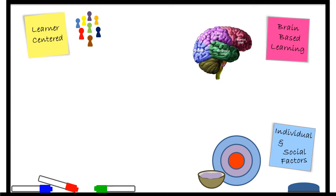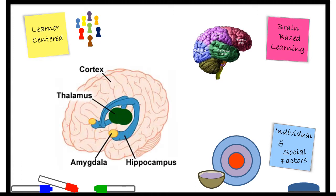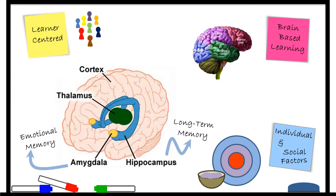Nestled in the middle of the brain is the amygdala and the hippocampus. The amygdala stores emotional memories, and the hippocampus is in charge of episodic or long-term memory. When these two portions of the brain are activated, memory retention is increased.